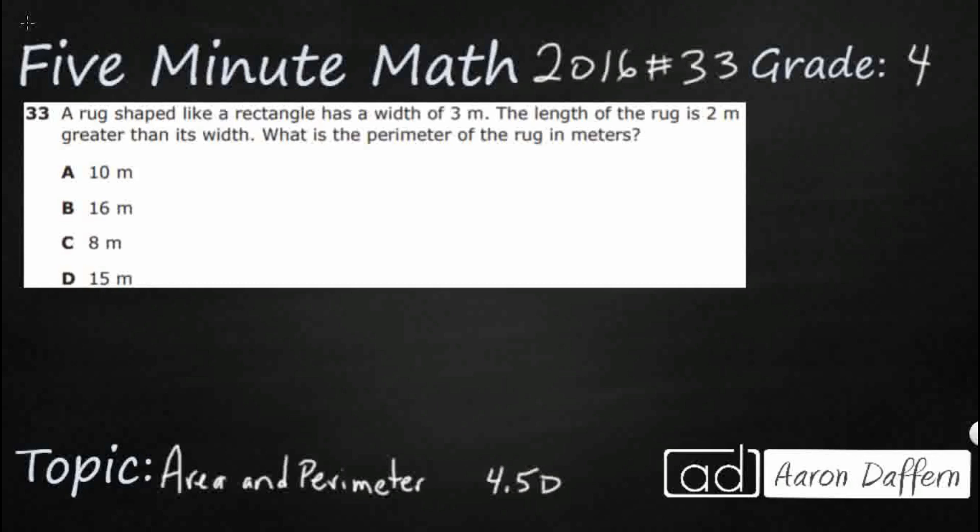So we have a rug. It is shaped like a rectangle, so we can just draw ourselves a rectangle here. It doesn't really matter if it's a rug or a painting or anything. We just need to know it is a rectangle because that is a shape that we know how to find the perimeter of.